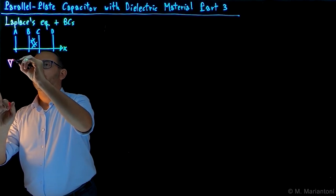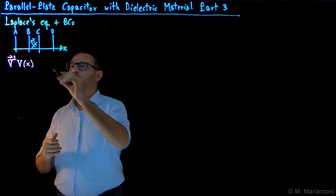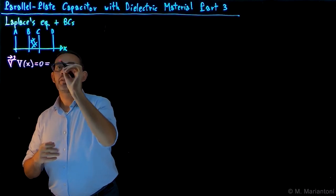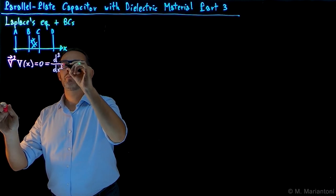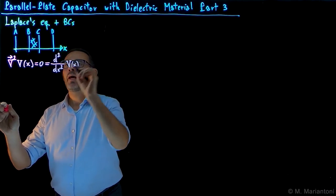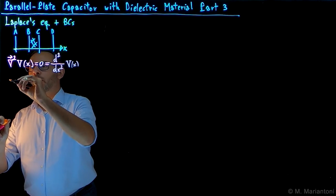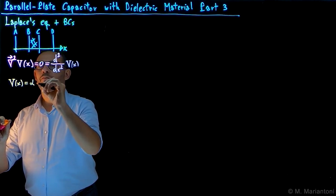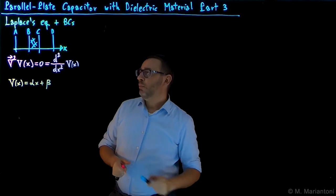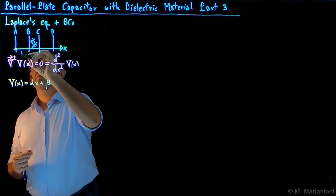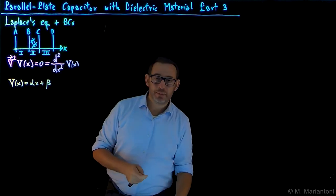The scalar Laplacian of V, for symmetry reasons, is not a function of x — same reason why the field is uniform — and has to be equal to zero. With respect to this Cartesian coordinate system, this simply means that the second derivative with respect to x of V(x) equals zero. The solution is V(x) = αx + β. In this problem, however, we have three regions: region one, region two, and region three.